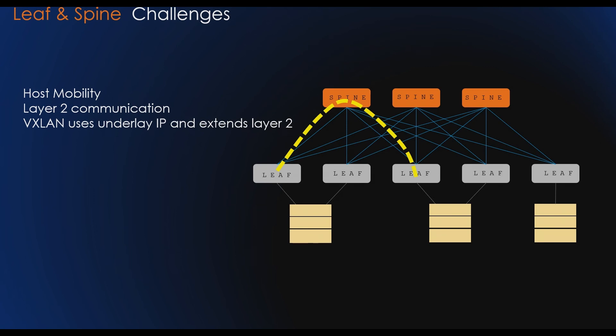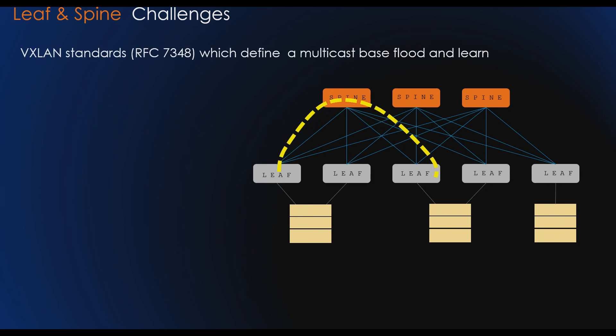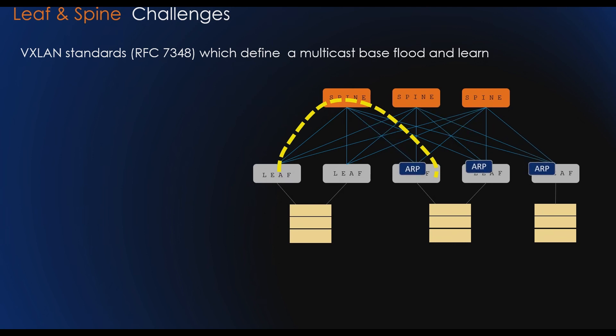VXLAN flood-and-learn complies with IETF standards, which define a multicast-based flood-and-learn approach without a control plane — essentially data plane learning. When a frame needs to be sent to an unknown destination, the sender broadcasts a query to all destinations. Since VXLAN flood-and-learn has no control plane, the multicast group scaling needs to be designed carefully, ideally mapping VXLAN segments to IP multicast groups to provide optimal forwarding.